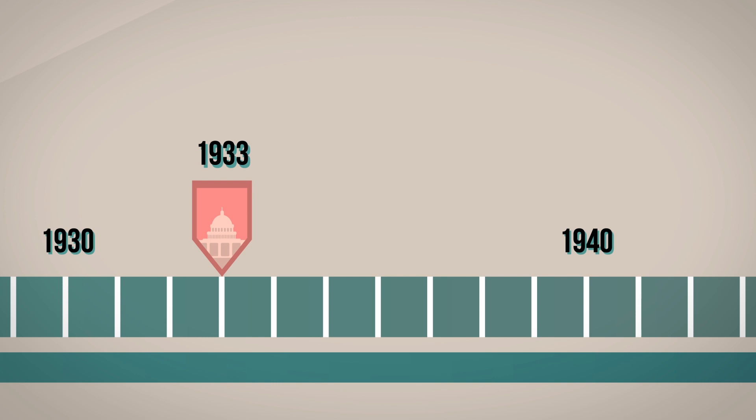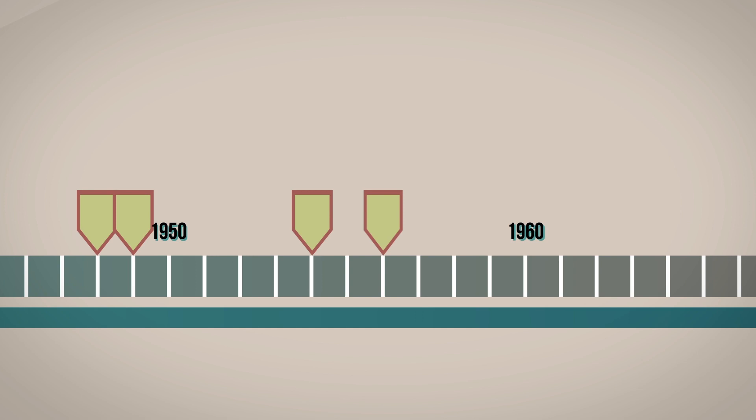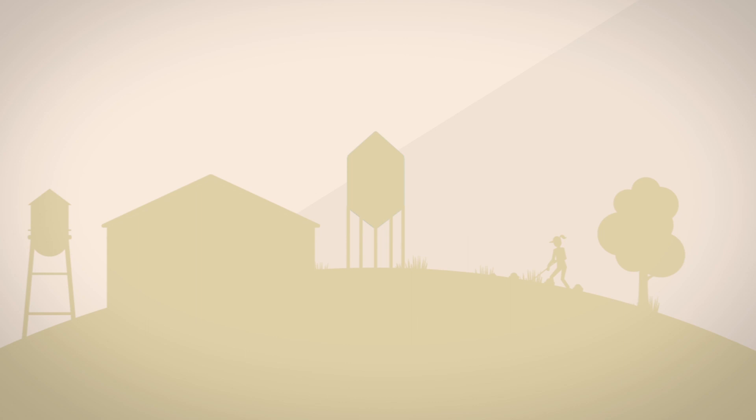During the Great Depression, the federal government drafted a piece of legislation to protect the food supply and the farmers who create it. Now, the Farm Bill is passed every 5 years so that those goals can continue to be met in an ever-changing world.